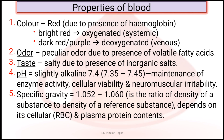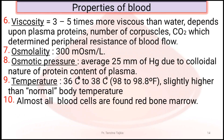The properties of blood: color is red; odor is peculiar due to presence of volatile fatty acids; taste is salty due to inorganic salts; pH is slightly alkaline at 7.35 to 7.45 — necessary for enzymatic activity, cellular viability, and neurovascular irritability. Specific gravity is about 1.050 to 1.060; viscosity is 3 to 5 times more than water; osmolarity is about 300 milliosmol per liter; osmotic pressure is about 25 mmHg.